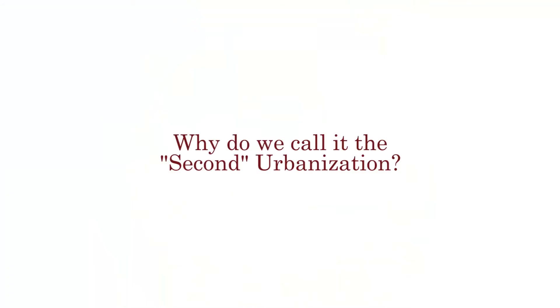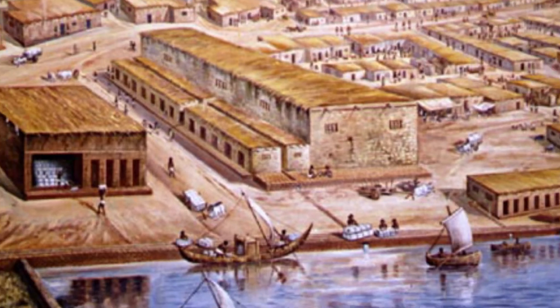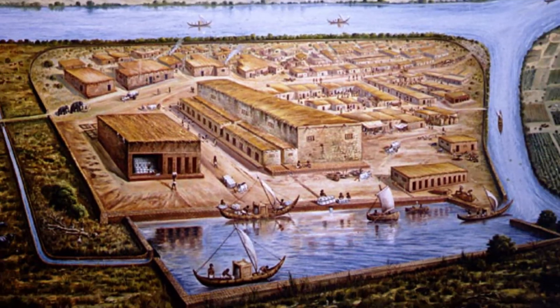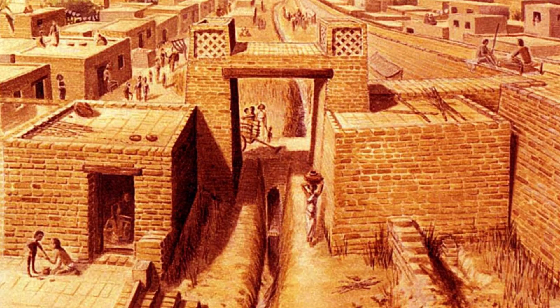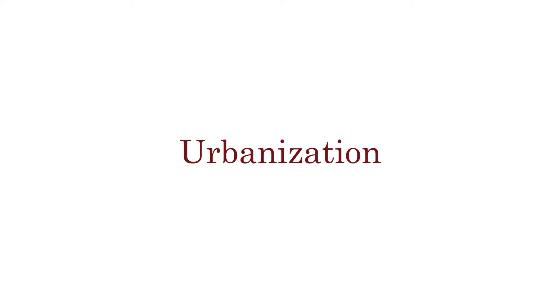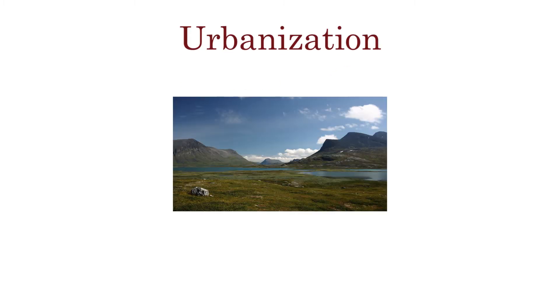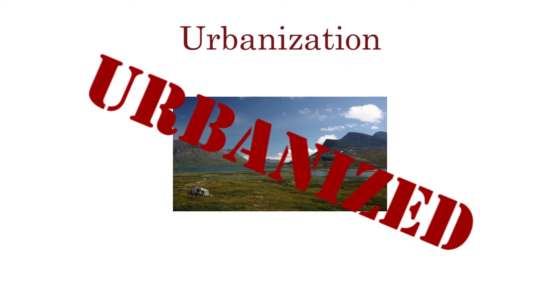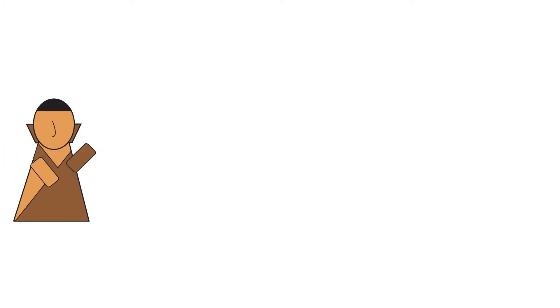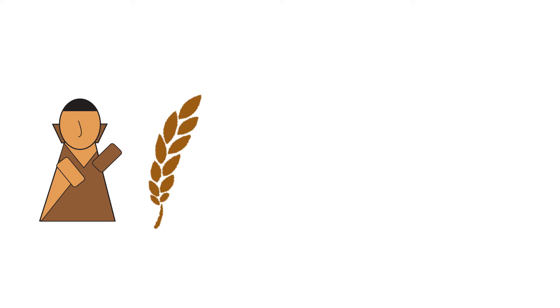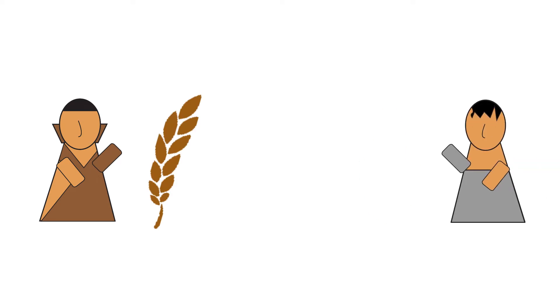It was called the second urbanization simply because it was the second time that this region underwent urbanization. Now, let's take a look at what it takes for a region to become urbanized. The first factor is a surplus of commodities. Let's say a farmer in a village has extra wheat, and another farmer has a surplus of corn.